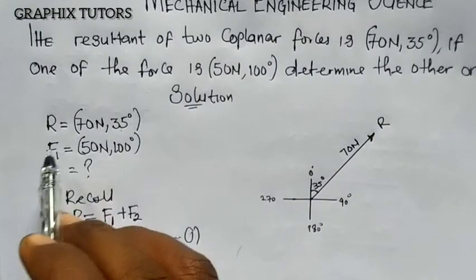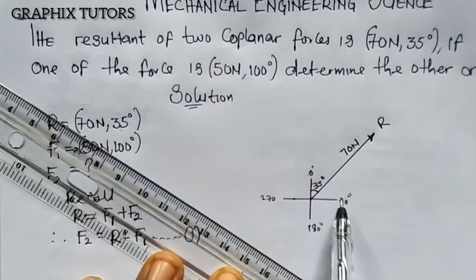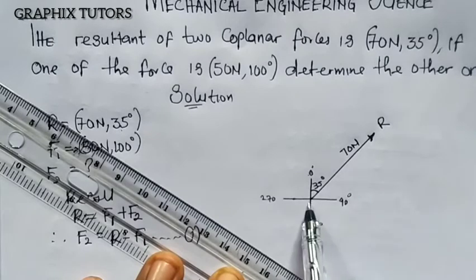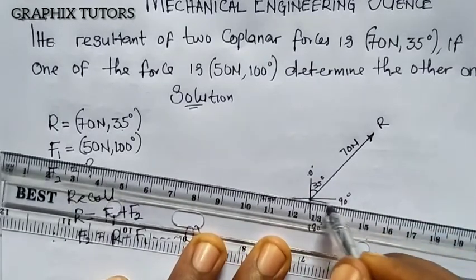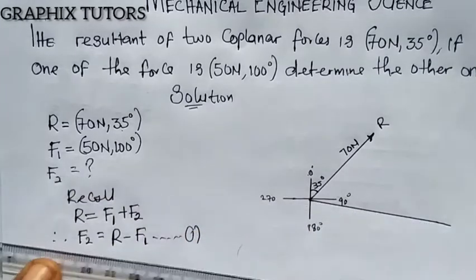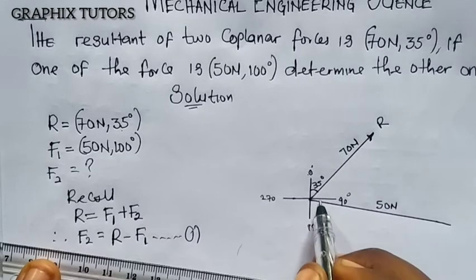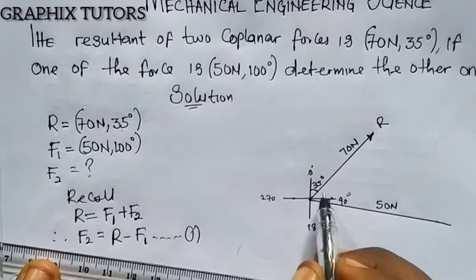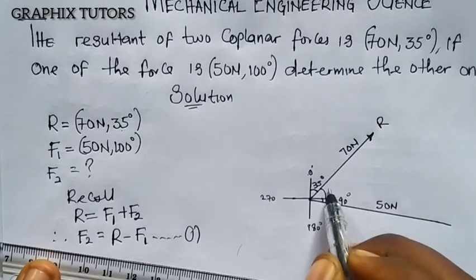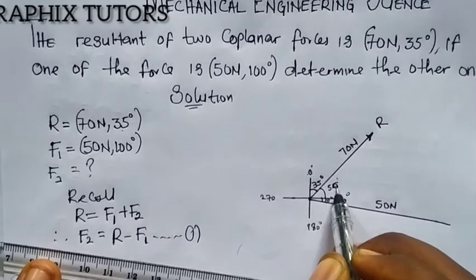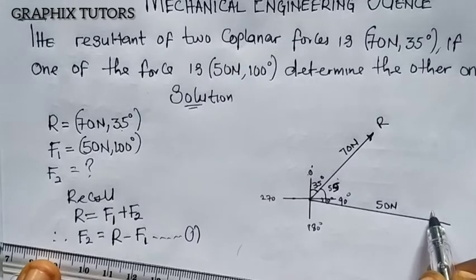Now we know that F1 has a magnitude of 50 newton and the angle is 100 degrees. From 0 to 90, adding 10 more gives 100, so it falls somewhere past the East axis. The angle from East is 10 degrees, meaning the angle from North is 90 plus 10 giving 100 degrees. This is my force F1.